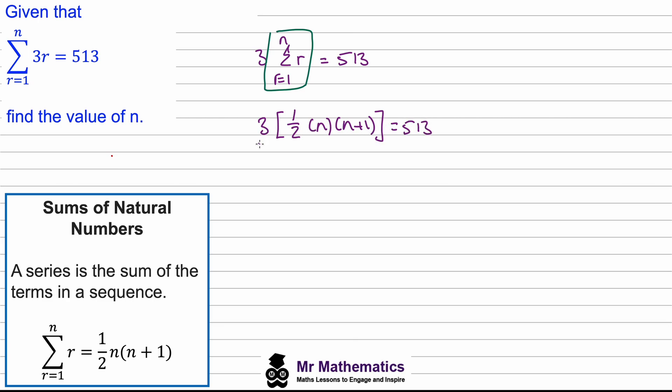So now we can divide both sides by three. These two will cancel, so we've got one half of n multiplied by n plus one will equal 171.